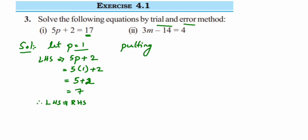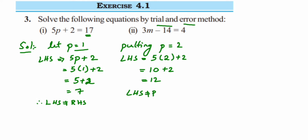Now putting p equal to 2: LHS will be 5 into 2 plus 2, which is 10 plus 2, which is 12. On the RHS we have 17, so LHS is not equal to RHS again.